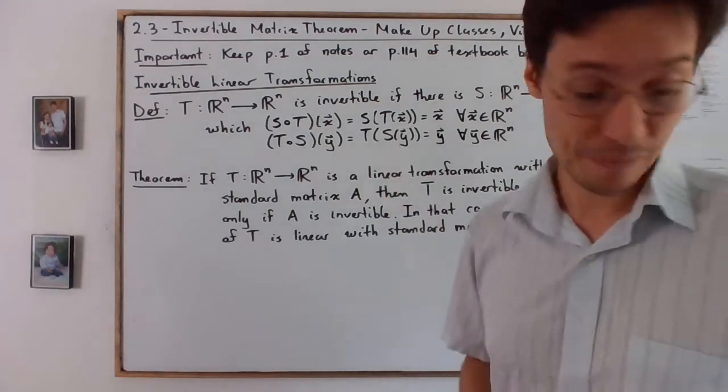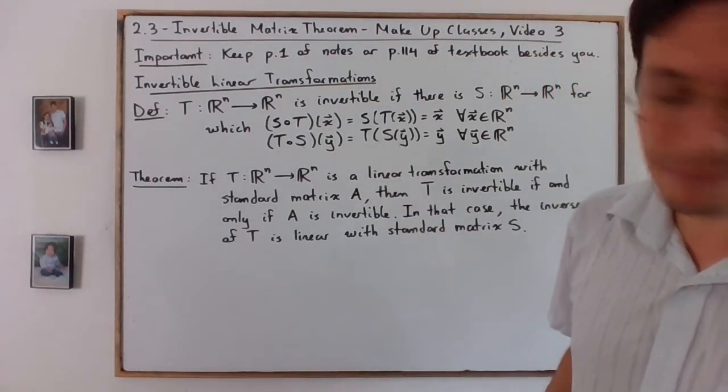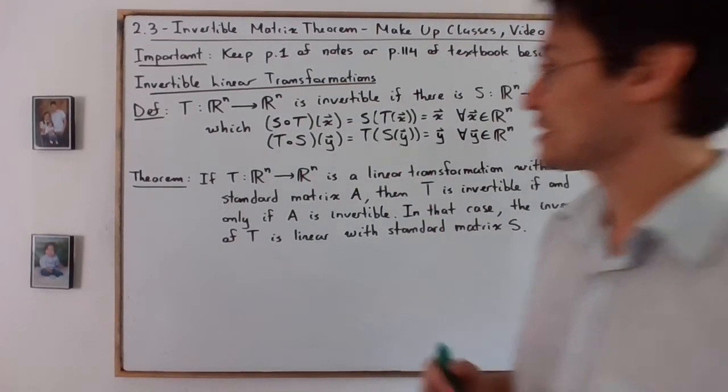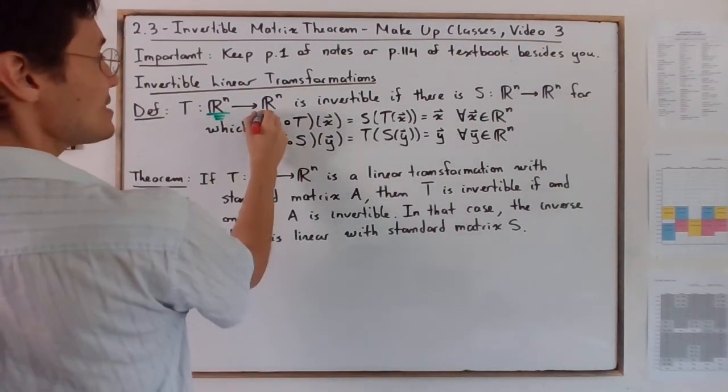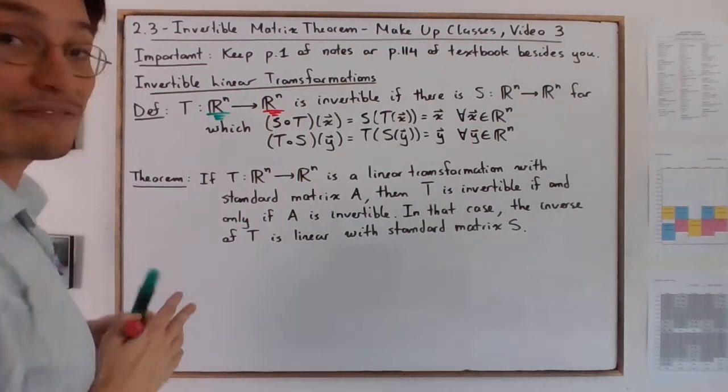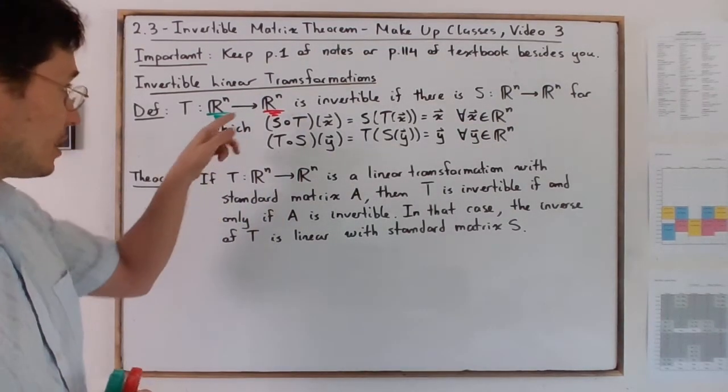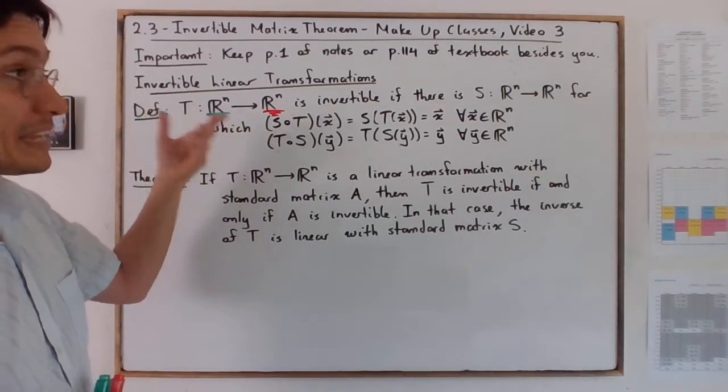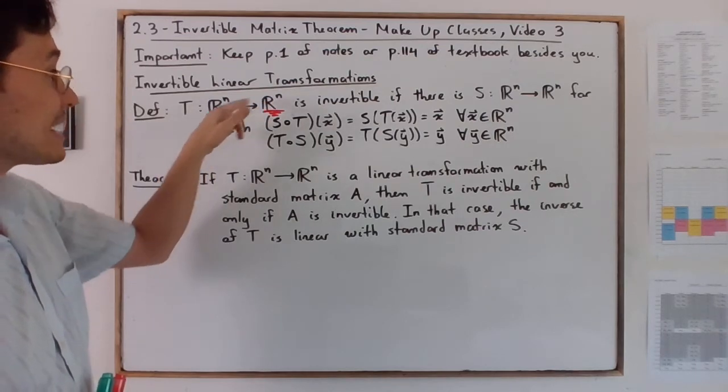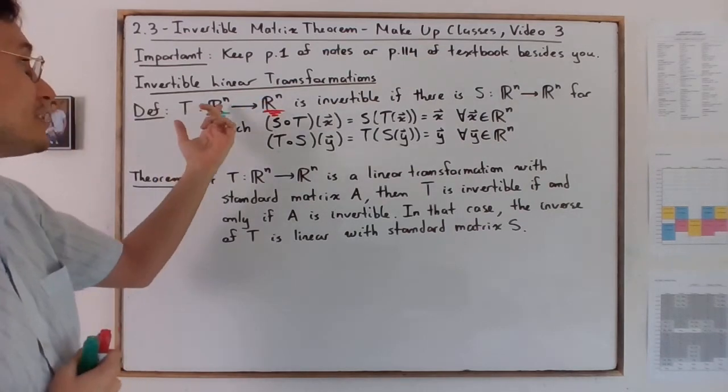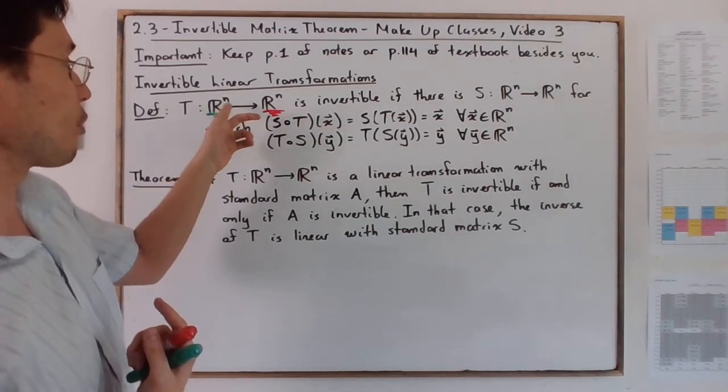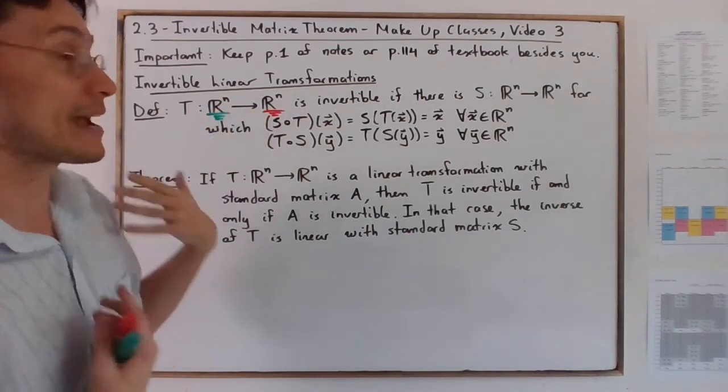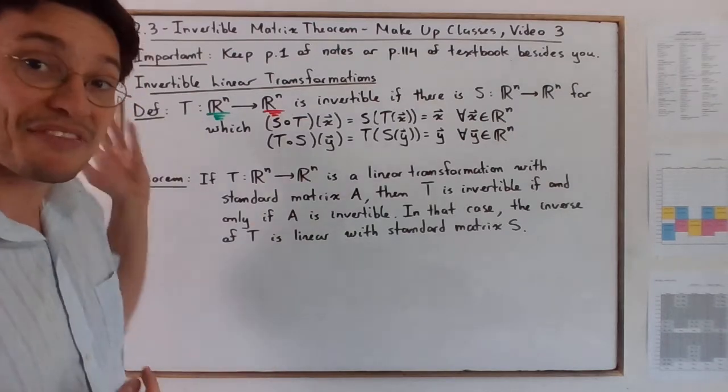First, the definition. Let me color code some stuff here. R^n is the domain of T and R^m is the codomain. It's confusing because it turns out that in order to be invertible you must have the same domain and codomain dimension, but for a transformation from R^n to R^m it just means they're actually the same.